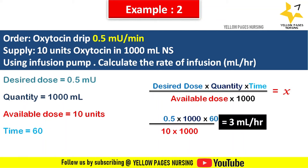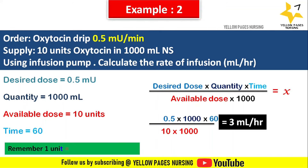Time is 60 minutes. Remember: 1 unit equals 1000 milli-units. Applying all values in the formula: 0.5 × 60 × 1000 ÷ (10 × 1000) = 3. Hence we set 3 ml per hour in the infusion pump.